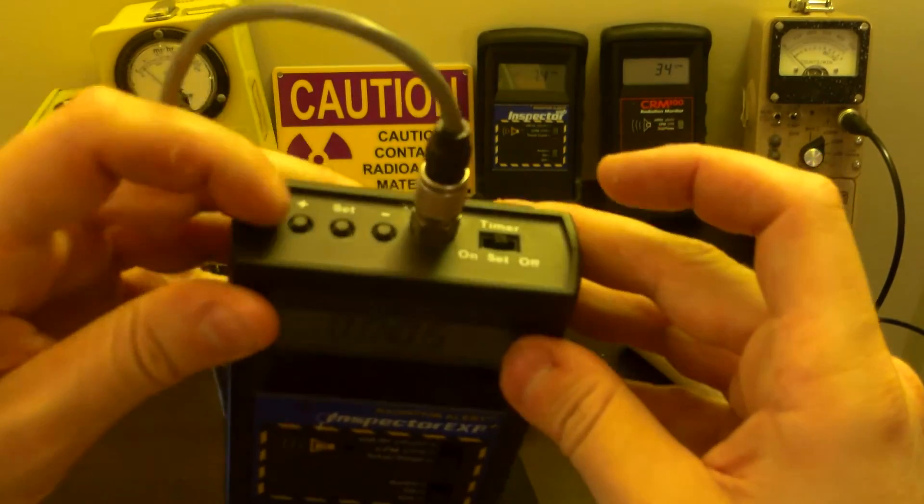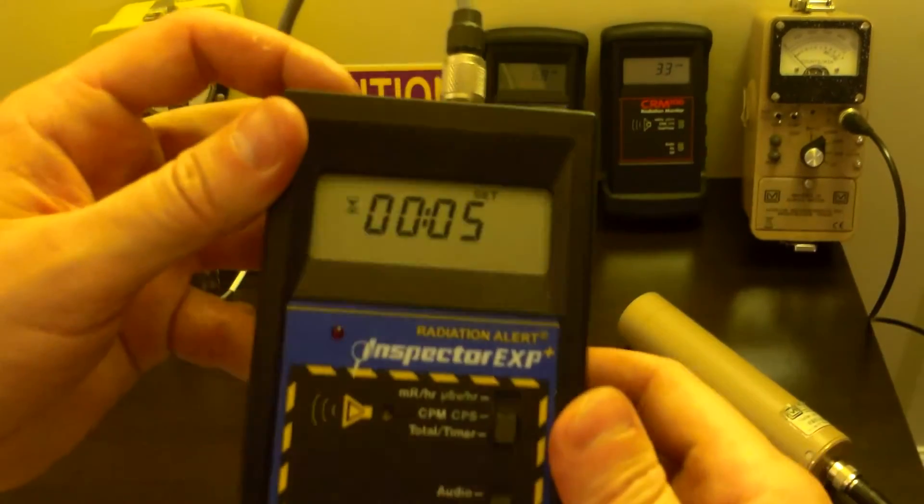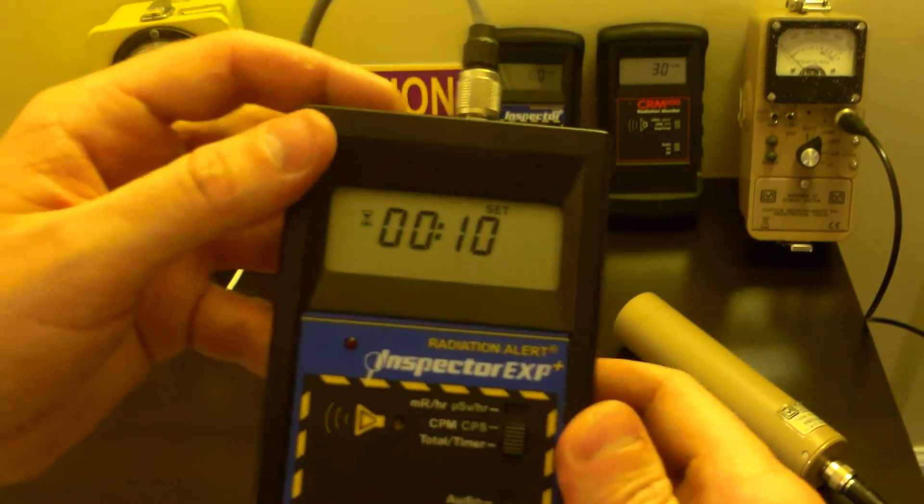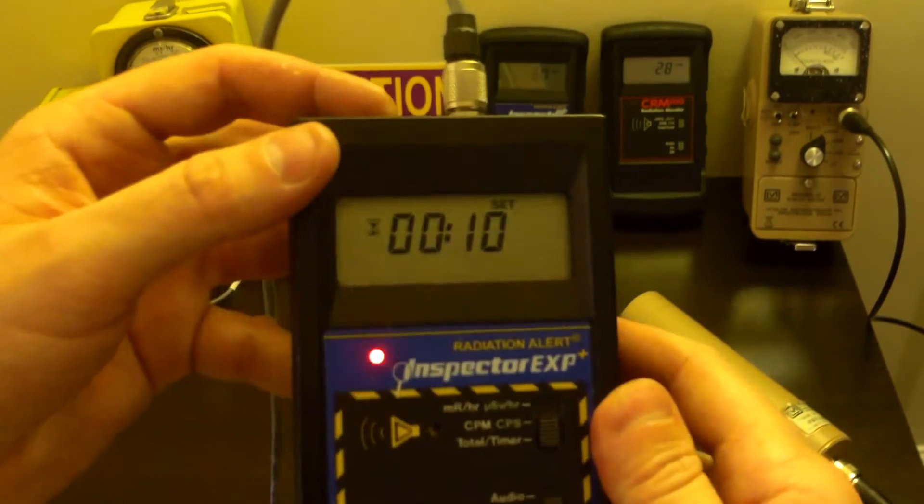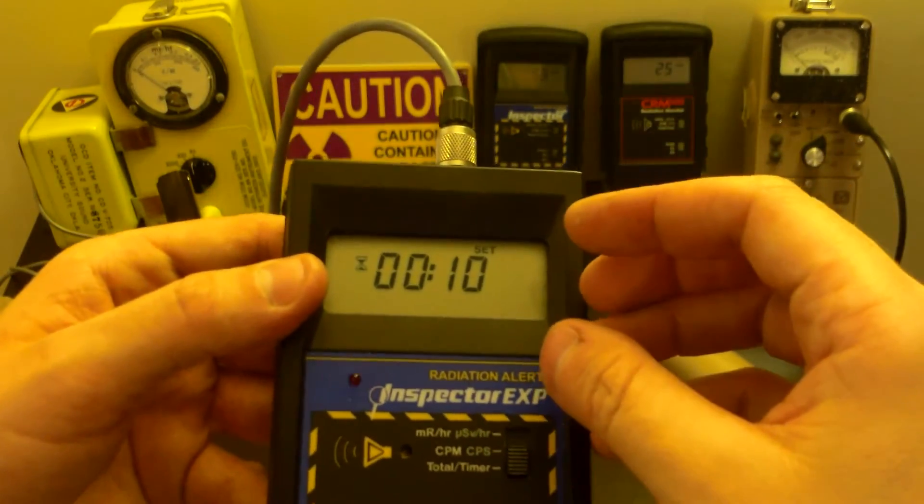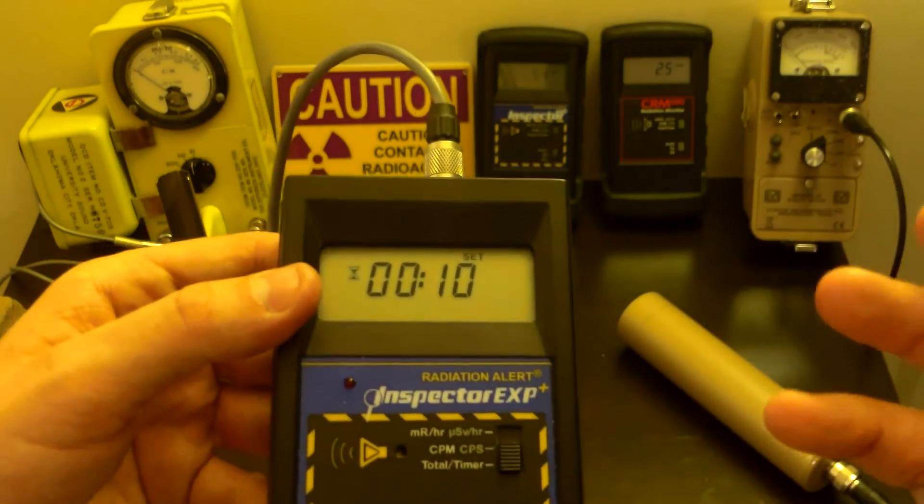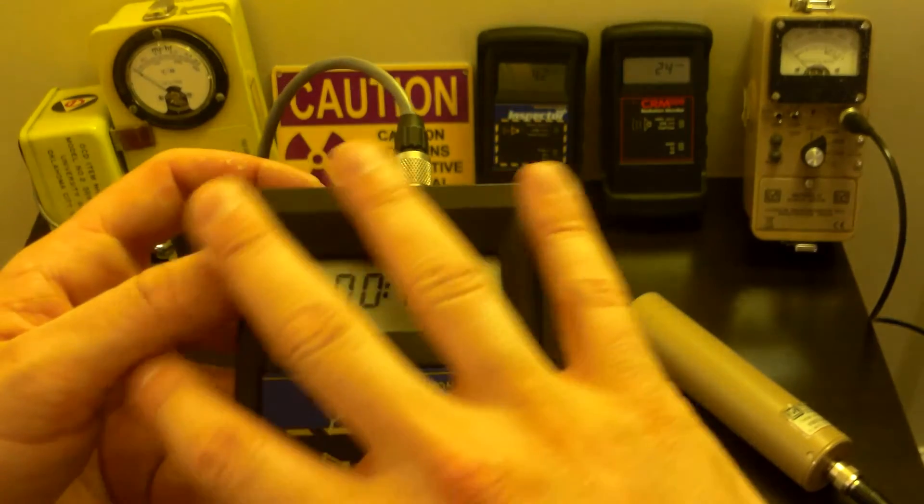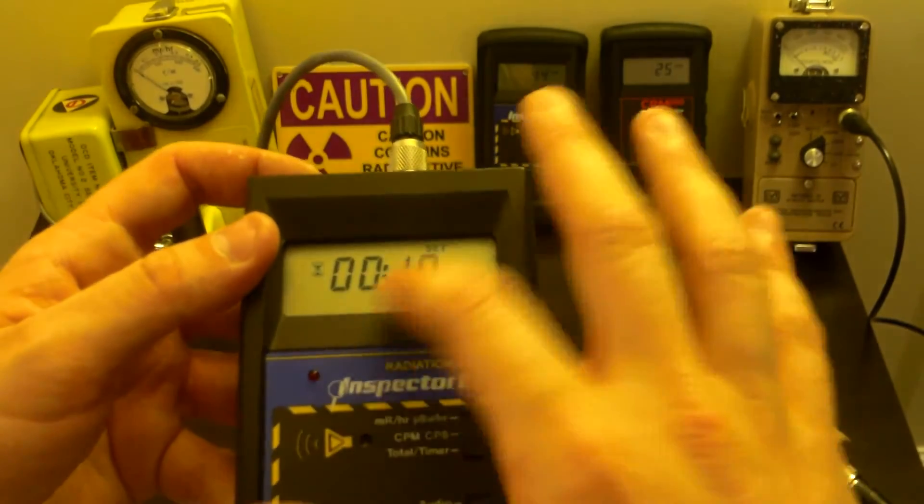And you go up here, and you see where it says off, set, and on. Change that to set. Using this plus and minus in set buttons, change the time. We have the time set for 5 minutes. Set it for 10 minutes. That's the best time I usually use for a counting.